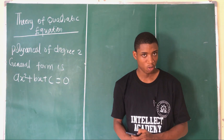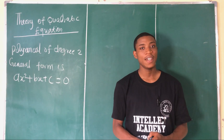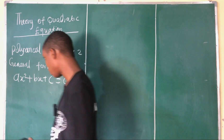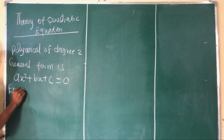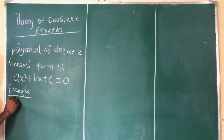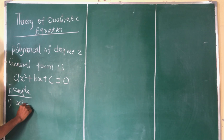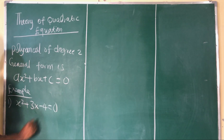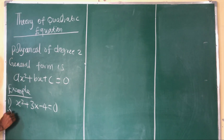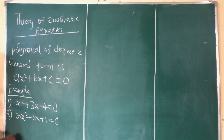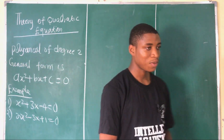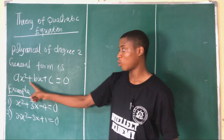Now let's see some examples of quadratic equations. First example: x² + 3x − 4 = 0. Second example: 2x² − 3x + 1 = 0. These are examples of quadratic equations, and we can see this matches the general form ax² + bx + c = 0.